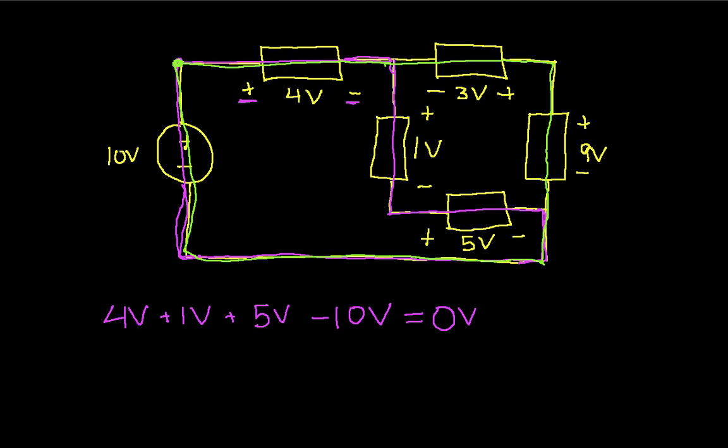On this path, I again encounter the 4 volt load from plus to minus. The next load that I encounter is 3 volts, but now I'm going minus to plus. So that's going to be minus 3 volts. I encounter 9 volts, and then I go all the way around and get the source 10 volts. And this does again equal zero volts.